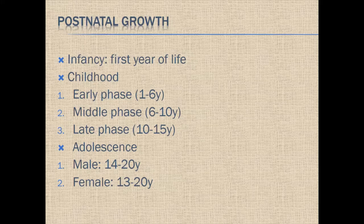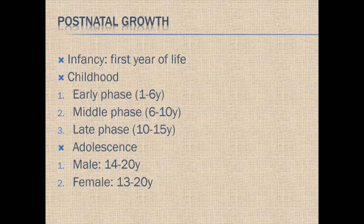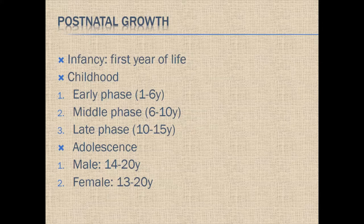After birth, from the first day to the first year of life, we call the baby an infant — the infancy stage. Then comes the childhood phase: from year one to six is early childhood, 6 to 10 is middle, and 10 to 15 is the late phase. Then we have the adolescence stage, with overlap with late childhood because adolescence is marked by sexual maturity, which varies between individuals. For males, 14 to 20 is adolescence; for females, 13 to 20. It's important to know these terminologies in terms of timing of treatment and diagnosis.